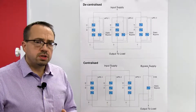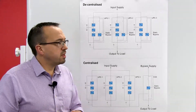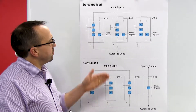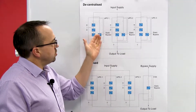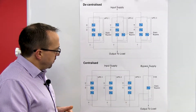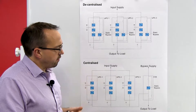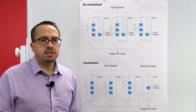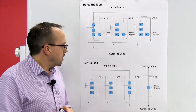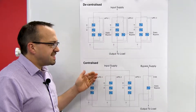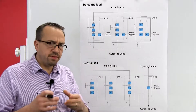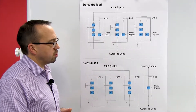Firstly, let's look at costs. In terms of costs we can look firstly at the actual UPS units themselves. In the decentralized system you have three UPS systems each with their own static bypasses. In the centralized system you again have three UPS modules, however there is an additional fourth cabinet containing the static bypass and all of the controlling architecture. The centralized bypass solution is typically slightly more expensive than the decentralized approach.